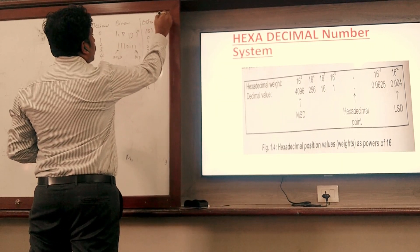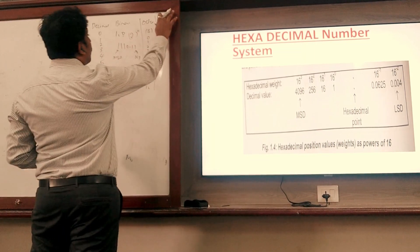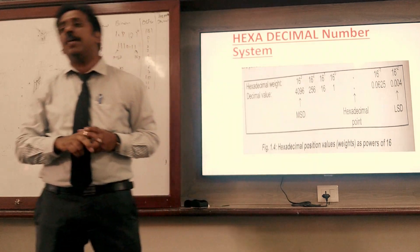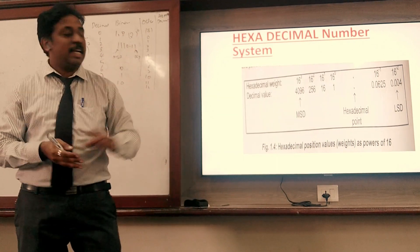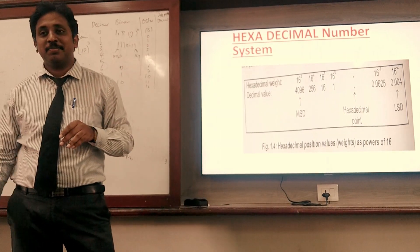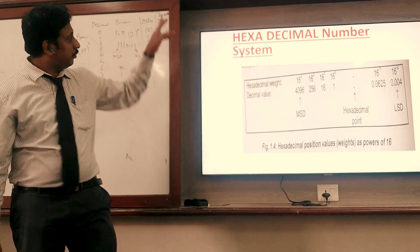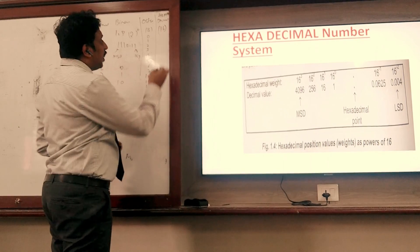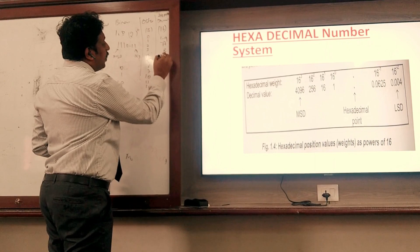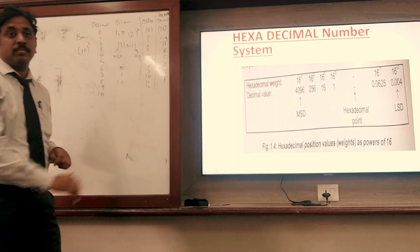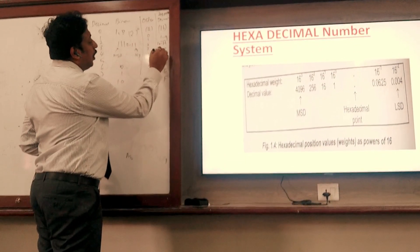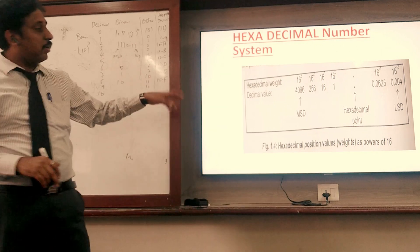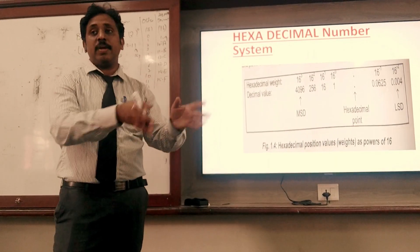Hexadecimal is the number system used worldwide in all programming languages — that is why it is extensively used. Hexadecimal has base 16, so there are 16 numbers. The digits are 0, 1, 2 through 9, then A for 10, B for 11, C for 12, D for 13, E for 14, and F for 15. Totally 16 numbers including 0. Hence it is called the hexadecimal number system. Again, LSD and MSD apply.